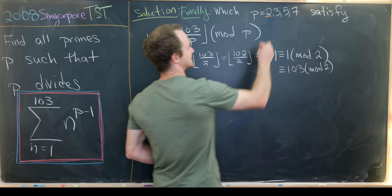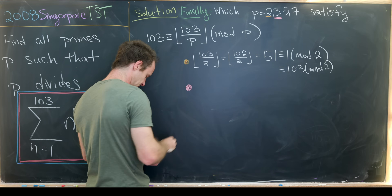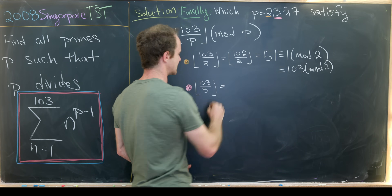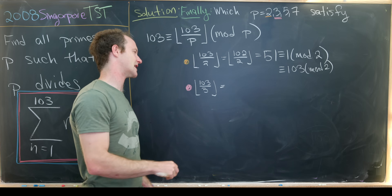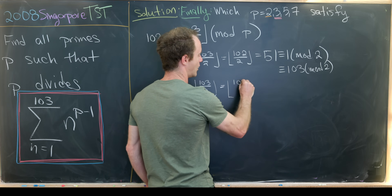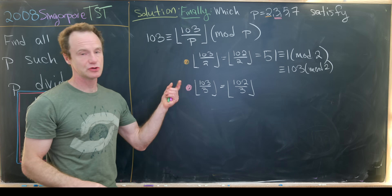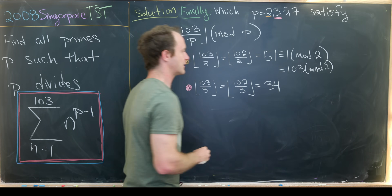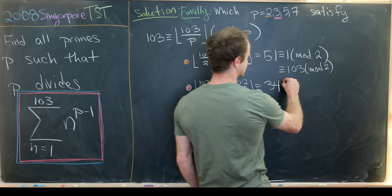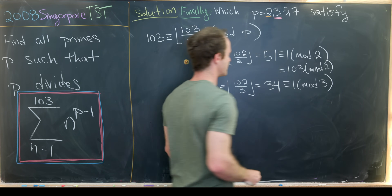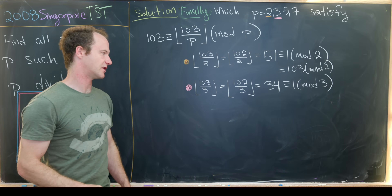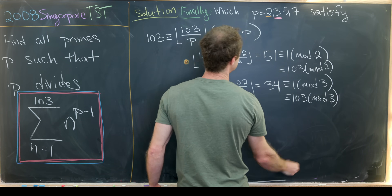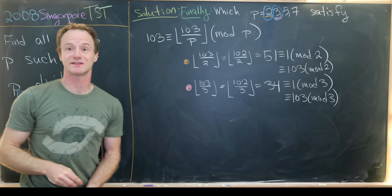For p = 3: floor(103/3) = floor(34.33...) = 34. Now 34 mod 3: since 102 = 34·3, we get 34 ≡ 1 mod 3. And 103 = 102 + 1 ≡ 1 mod 3. So 103 ≡ 1 ≡ floor(103/3) mod 3, and p = 3 is also a solution.